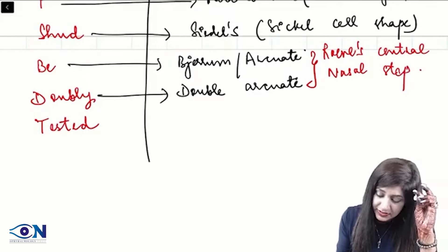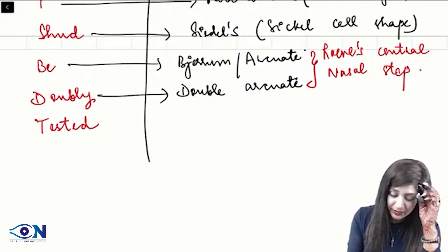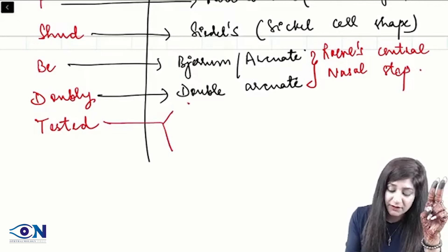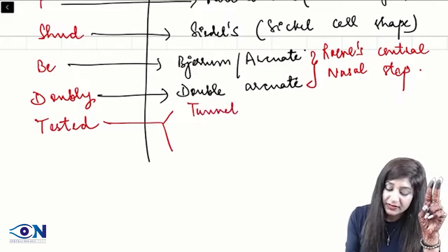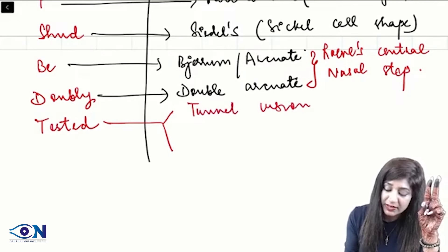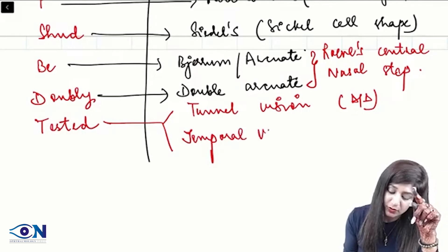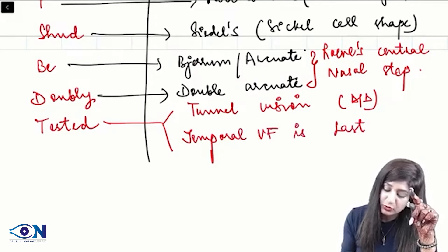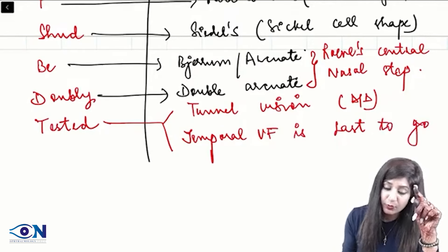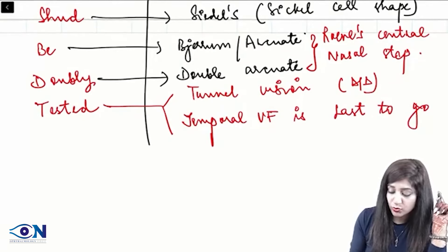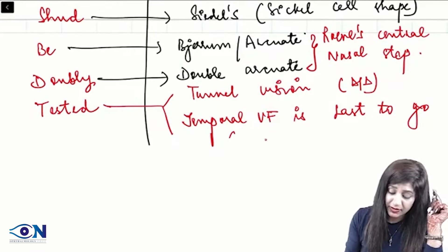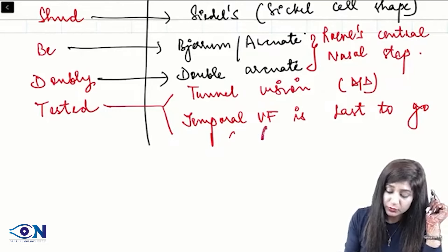Ronne's central nasal step pattern that is formed. Then we have tested two times TF. T for tunnel vision. This patient comes with the tunnel vision. So, it is coming under the DD of tunnel vision also. And T for temporal. We have the temporal visual field is last to go. Temporal visual field is last to go. This is also a direct PYQ of 2018.